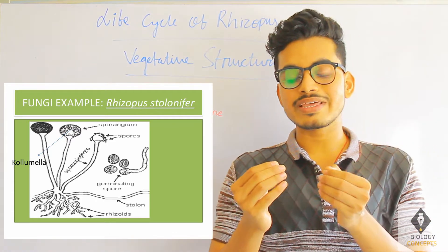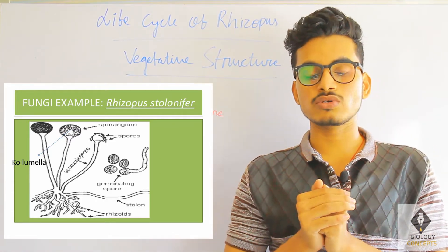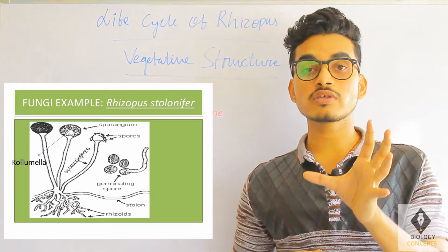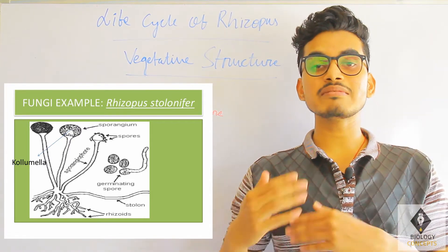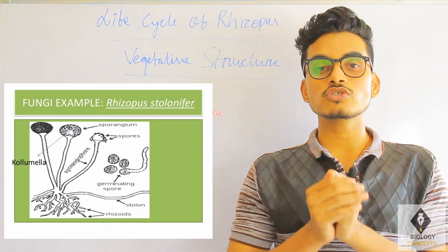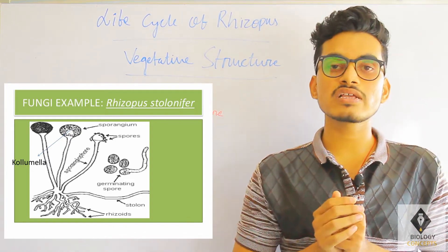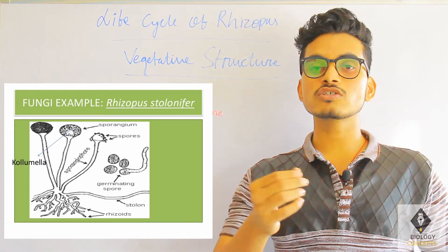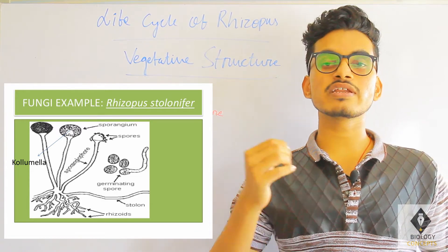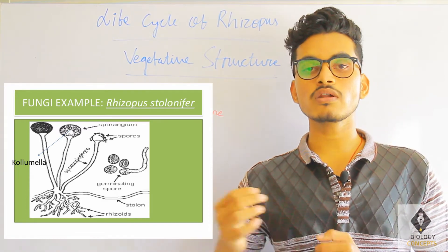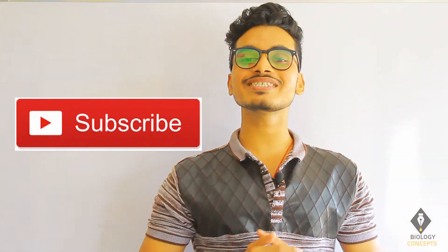Sporangiophores develop from the stolons, either singly or in many clusters or groups. They are totally opposite in direction as compared to the rhizoids. The main function of sporangiophores is to help in reproduction. At the tip of a sporangiophore there is a vesicle-like structure called the sporangia, which is specifically responsible for reproduction.